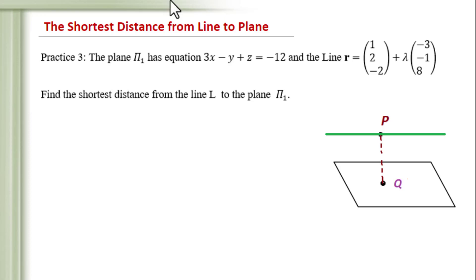The direction vector of L is (-3, -1, 8). The normal vector equals (3, -1, 1). Their dot product equals (-3)(3) + (-1)(-1) + (8)(1) equals -9 + 1 + 8 equals 0.